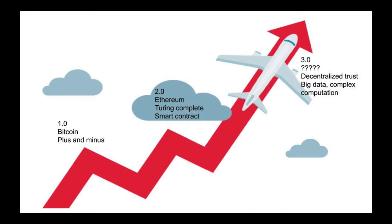However, Bitcoin only performed plus and minus operations, limiting its functionalities to fund transfers. In the Blockchain 2.0 era, Ethereum (ETH) takes the spotlight. Ethereum made a giant leap by introducing smart contracts that are able to do much more than Bitcoin's plus and minus functions. Smart contracts are Turing-complete virtual machines that can run relatively complex logic. That's why they are called contracts. Modern smart contracts are not perfect yet — even simple logic may cost a lot of time and money.